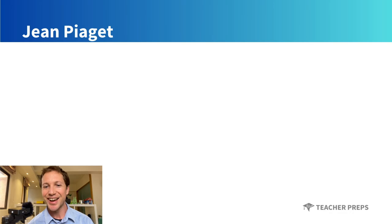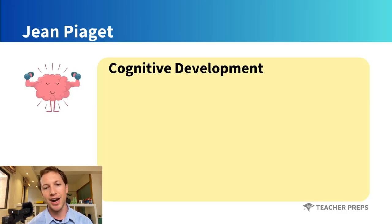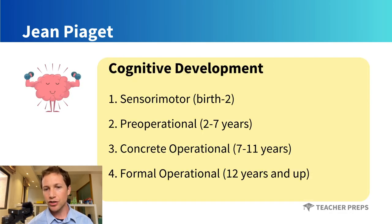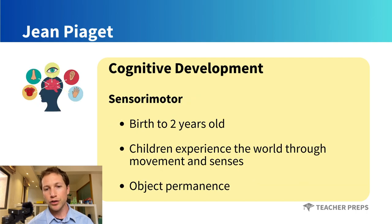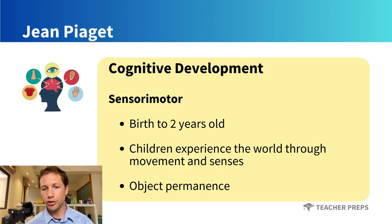First, we have Jean Piaget, who developed the theory of cognitive development, which divides cognitive development into four stages: sensorimotor, pre-operational, concrete operational, and formal operational. Beginning with the sensorimotor stage, which happens from birth to two years old, this is when children experience the world through movement and senses.